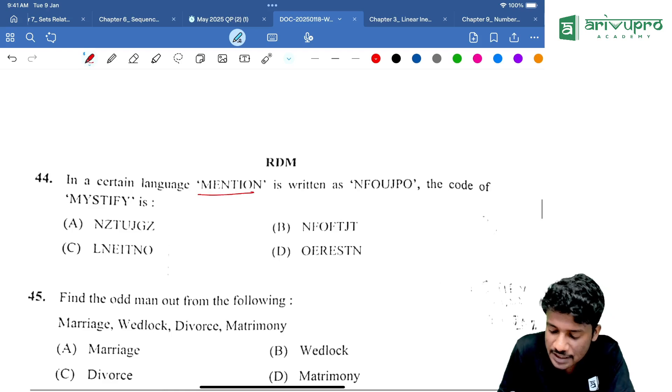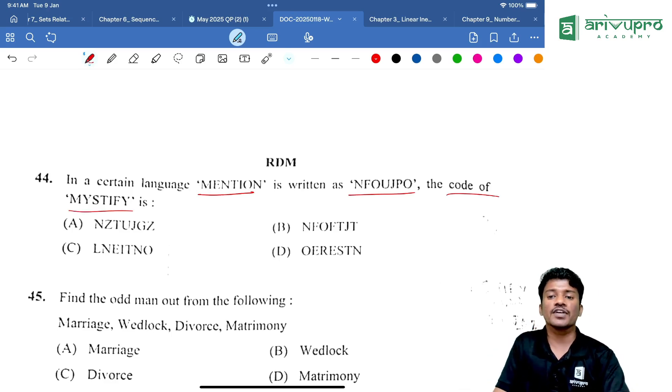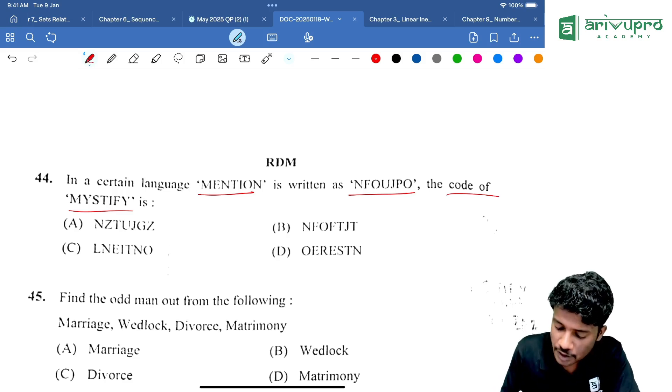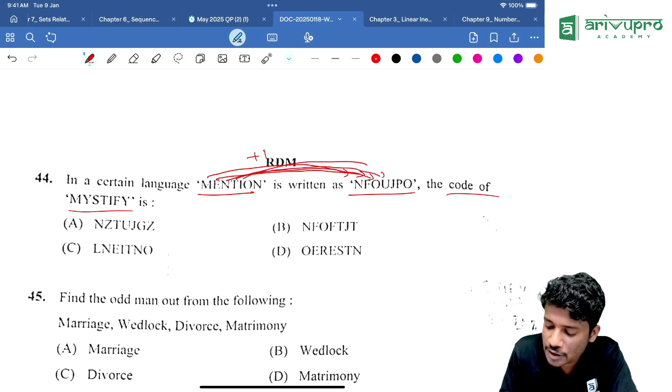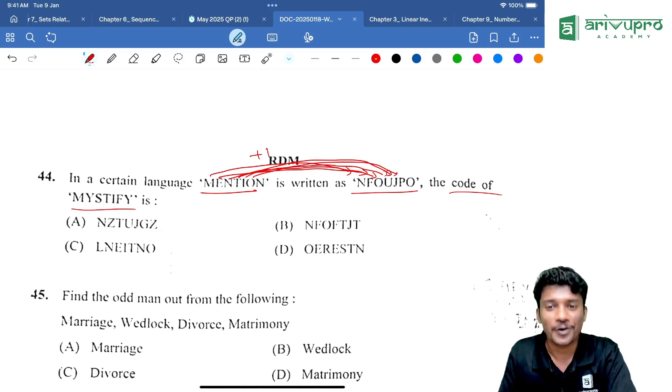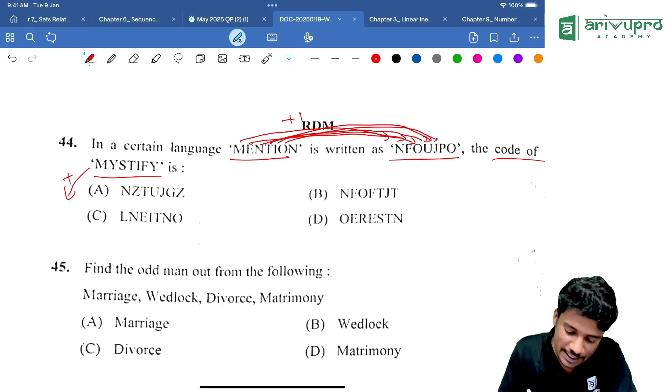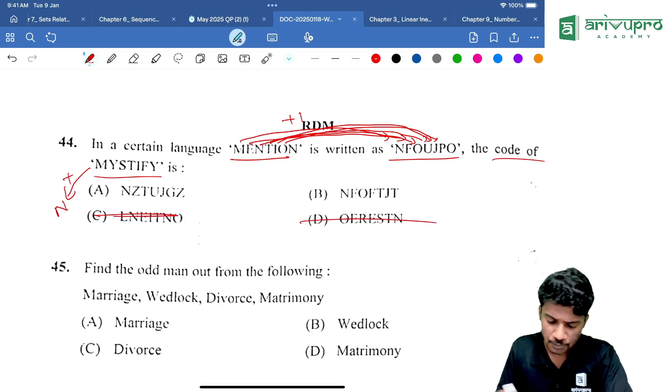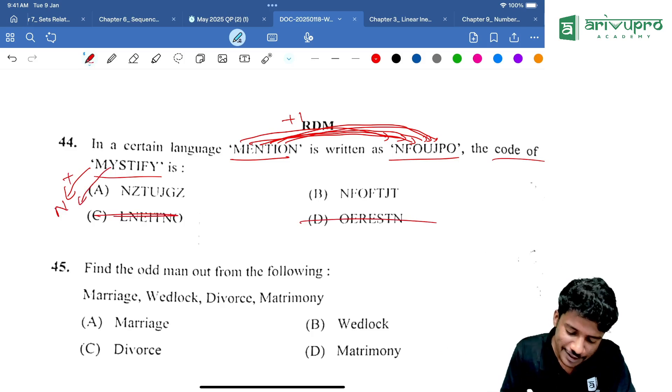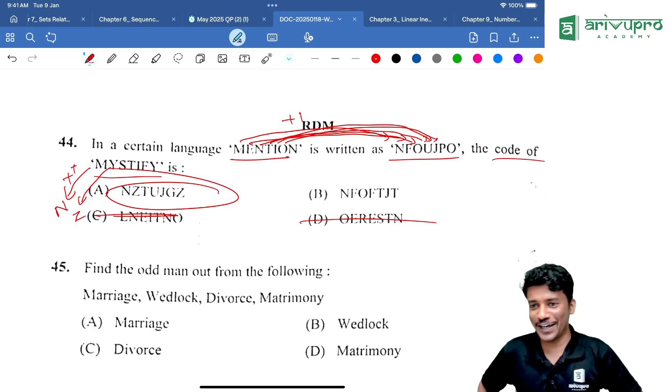In a certain language, MENTION is written as N-F-O-U-J-P-O. Then the code for MYSTIFY is what? We need to know the pattern. M is becoming N, that means plus 1. E is becoming F plus 1. N is becoming O plus 1. So MYSTIFY means M plus 1 is N, that means option C and D are wrong. Then Y plus 1 is Z. That means answer is option A.